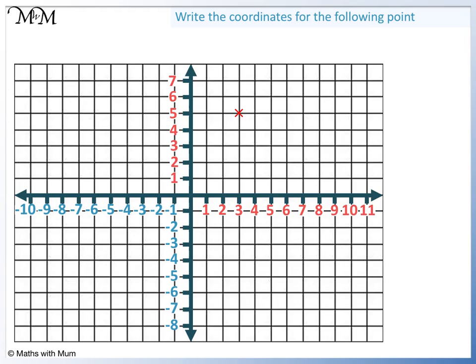We're going to write the coordinates for the following point. We start by reading across and we have 3. So we open the brackets and write 3 followed by a comma. Next we read up and we have 5. So the coordinates are (3, 5).